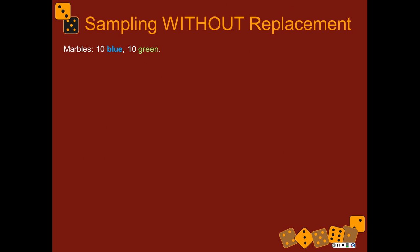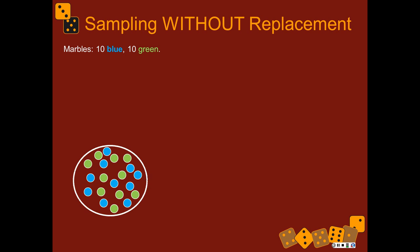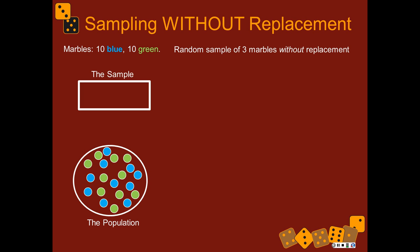Sampling without replacement — things get much more complicated and work into conditional probability. This is just to demonstrate where the complications come from. Same situation: 10 blue and 10 green marbles; you're going to randomly sample three marbles, but this time without replacement. There will be dependent probabilities, and it can work out many different ways.